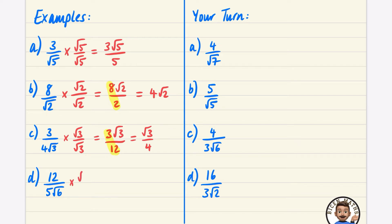This one multiplies by root six over root six. The numerator becomes twelve root six. The denominator is five times six, which is thirty. Simplifying twelve over thirty — both are in the six times table — divide top and bottom by six to get two root six over five.